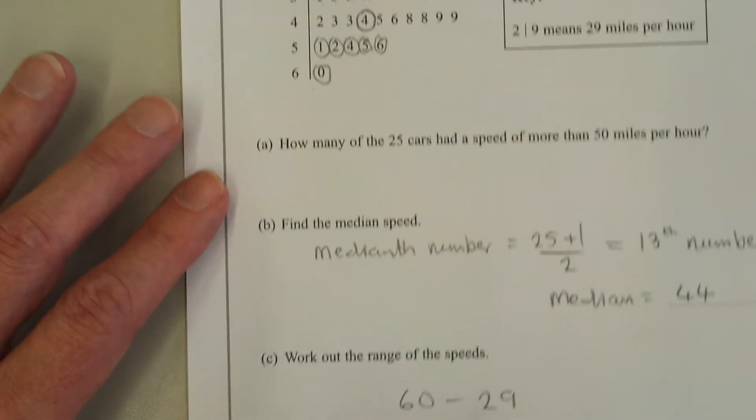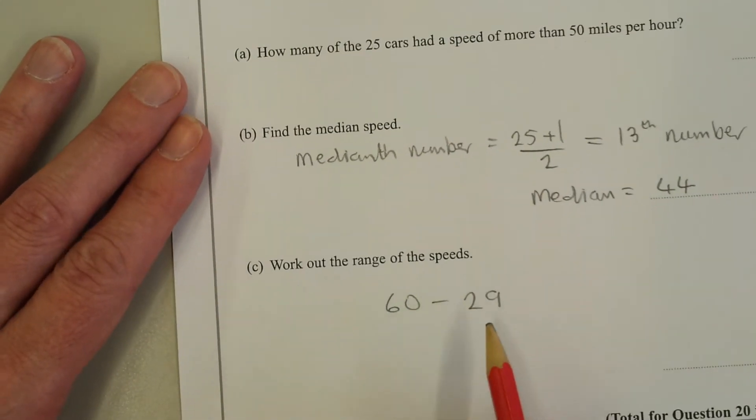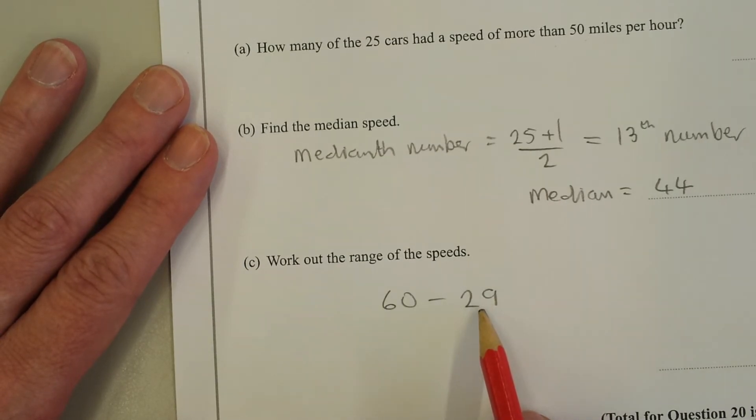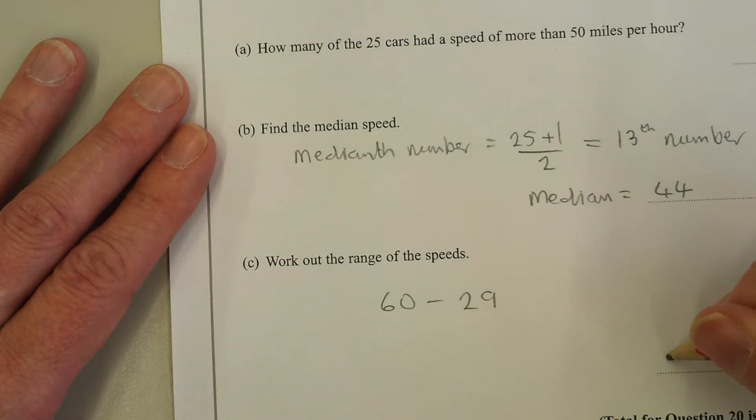It's quite an easy subtraction. 29 add 1 is 30, and add another 30 is 60. So it is 31.